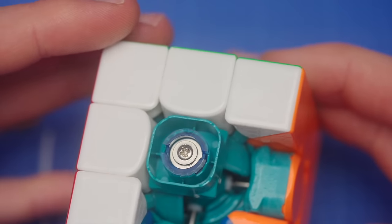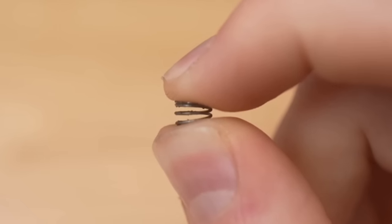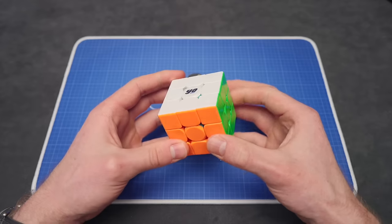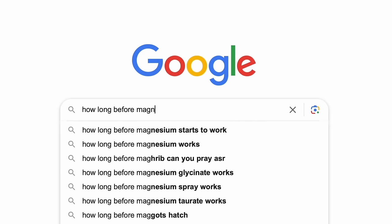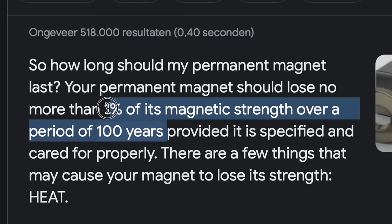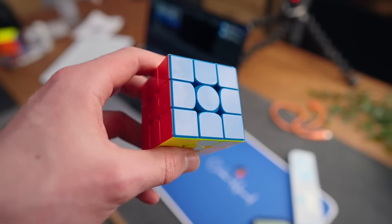Secondly, this cube has maglev. It replaces the spring by using two repelling magnets, which makes the cube, as a theme of this video, faster. One disadvantage though is that in 100 years, it will lose 5% of its strength.